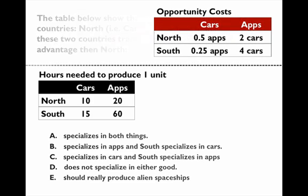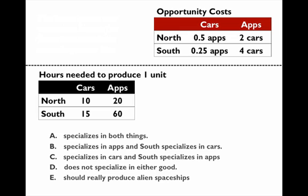For this one, the table gives you the hours needed to produce one unit. It says that North needs 10 hours to produce one car and 20 hours to produce an app. The South is not as productive — it needs 15 hours to produce a car and 60 hours to produce an app.